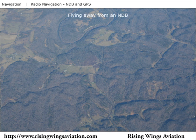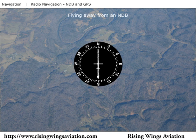To fly directly away from an NDB, first turn the airplane until the tail of the ADF needle is pointing directly ahead. The airplane is now pointing directly away from the station, but drifting with the wind. Search for the wind correction angle by maintaining different headings and bracketing as before.